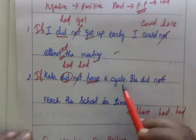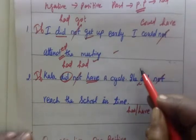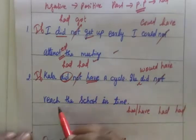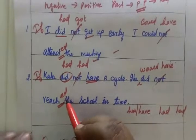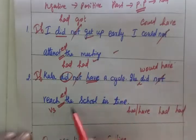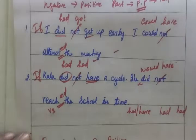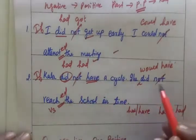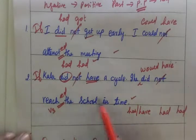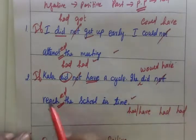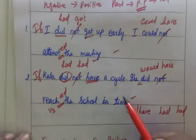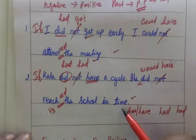If color had had a cycle, then according to the structure — would plus have plus third form — if color had had a cycle, she would have reached the school in time.